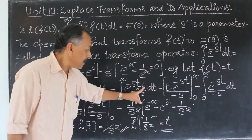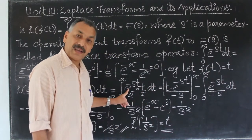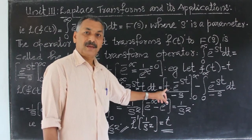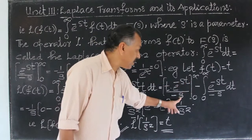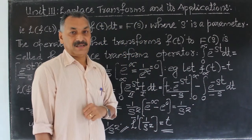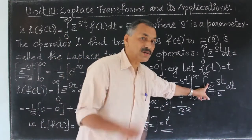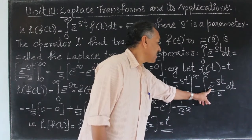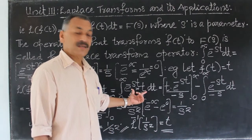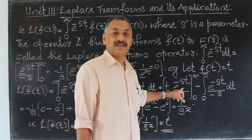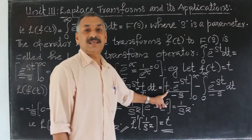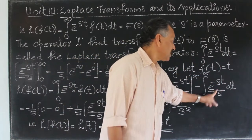Here t is algebraic and e raised to minus st is exponential. So the first function is t and the second is e raised to minus st. Integral of a product: first t times integral of second — integral of e raised to minus st is e raised to minus st divided by minus s — from 0 to infinity, minus the integral of derivative of first t — derivative of t is 1 — into integral of second e raised to minus st divided by minus s, from 0 to infinity.